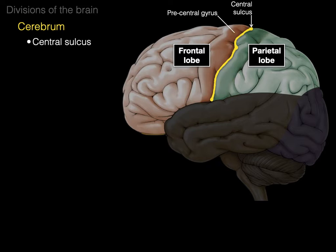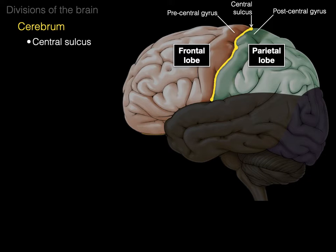In the frontal lobe, we have the precentral gyrus — before the central sulcus — and that's where the primary motor cortex is. Then there's the postcentral gyrus — after the central sulcus — and that's where the primary sensory cortex is located. I remember those because M comes before S in the alphabet: precentral for motor before, postcentral for sensory after.